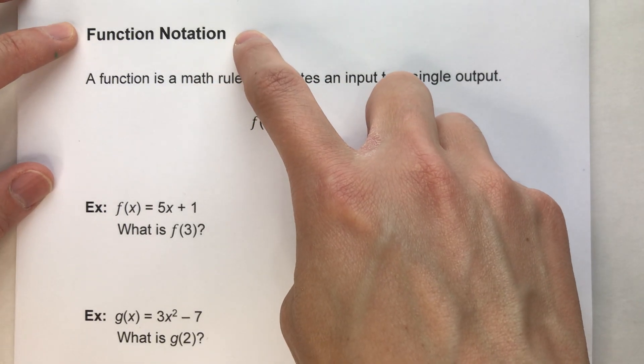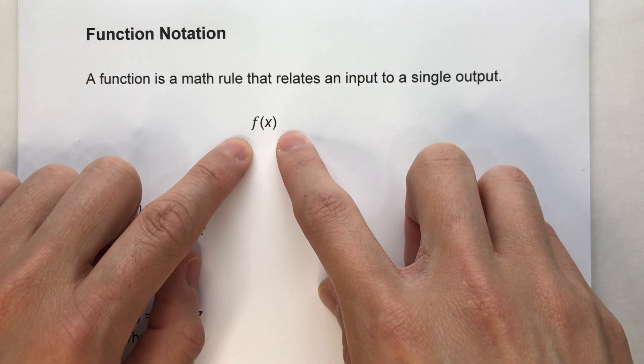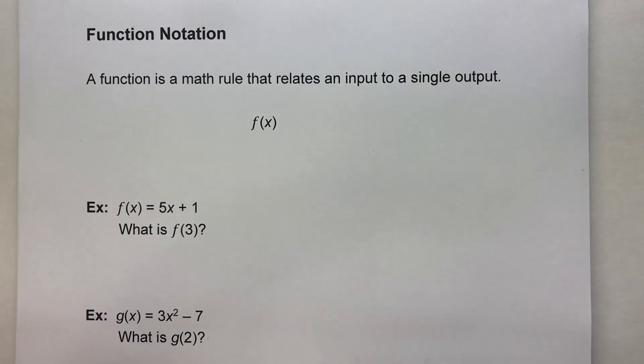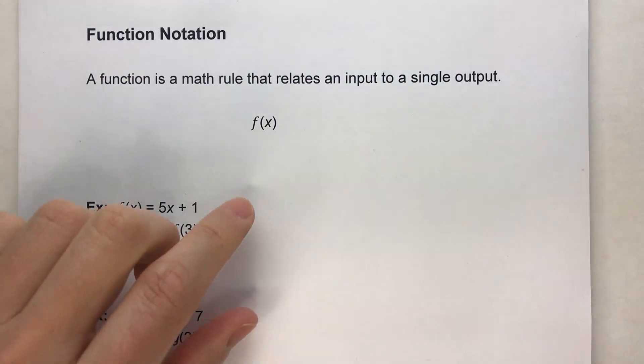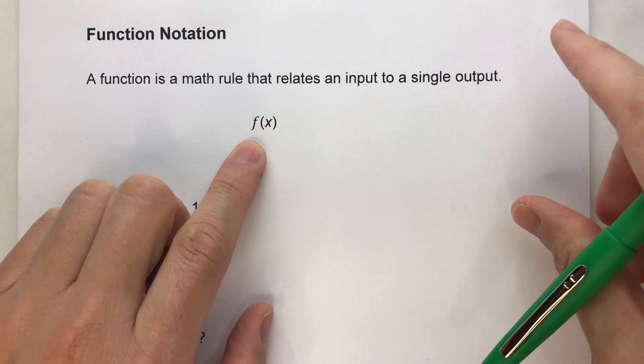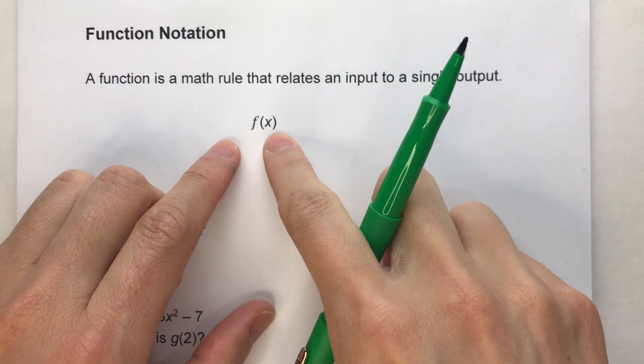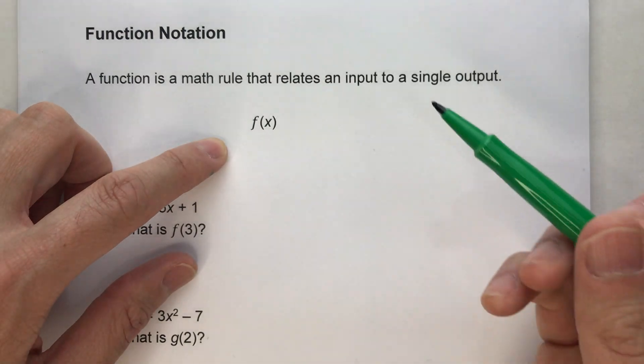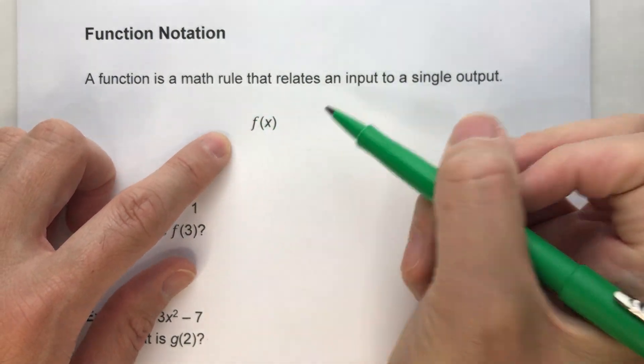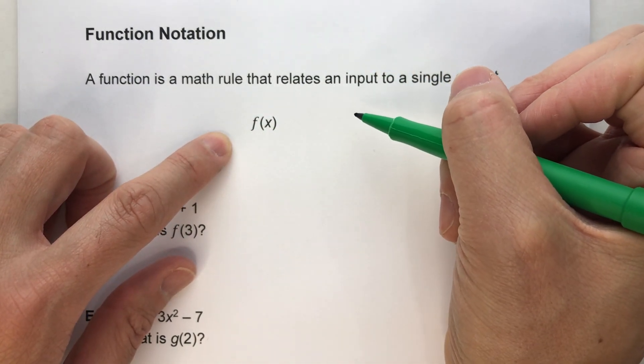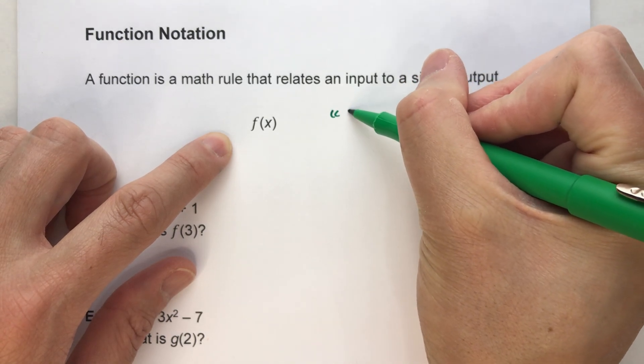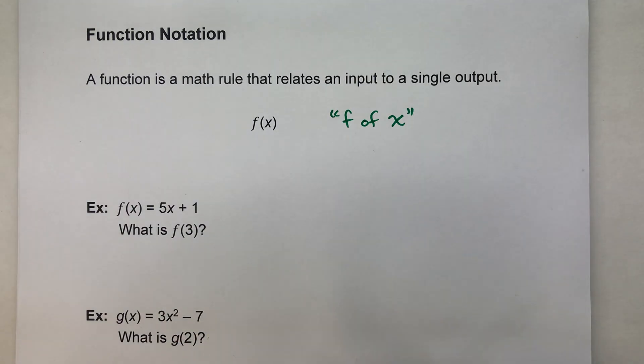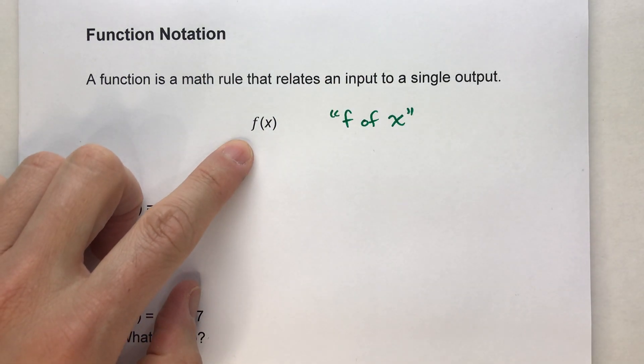Now, when we write things in function notation, we see things that look something like this. See where we've got the f and then we've got x in parentheses next to it? Normally in order of operations problems, when you see something next to parentheses, it means multiply. But in function notation, it means something different. This here is, if you were going to read it out loud, you would say f of x. That's how you would pronounce this if you were looking at this and reading it out loud.